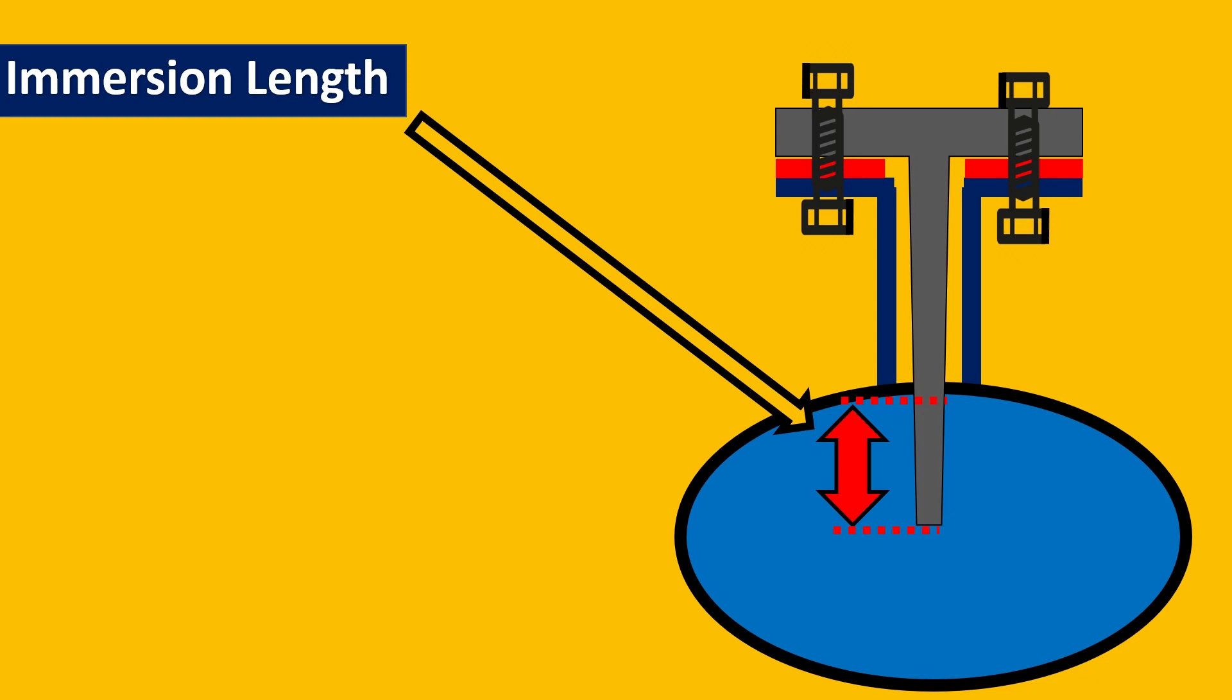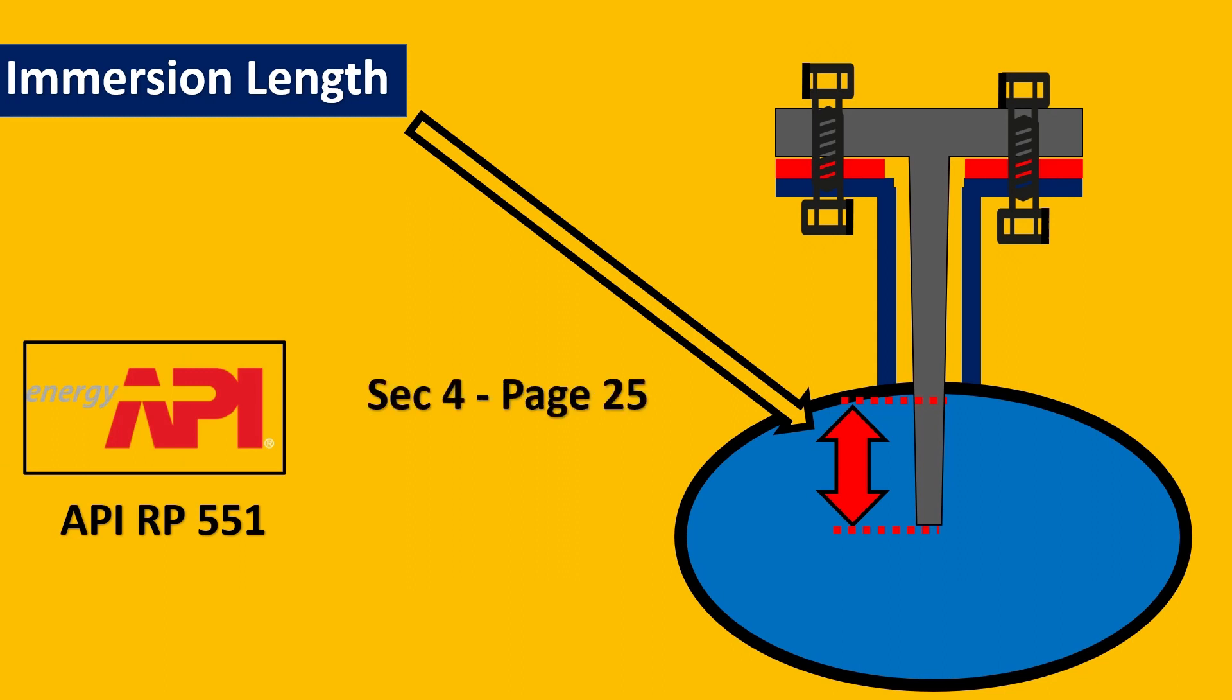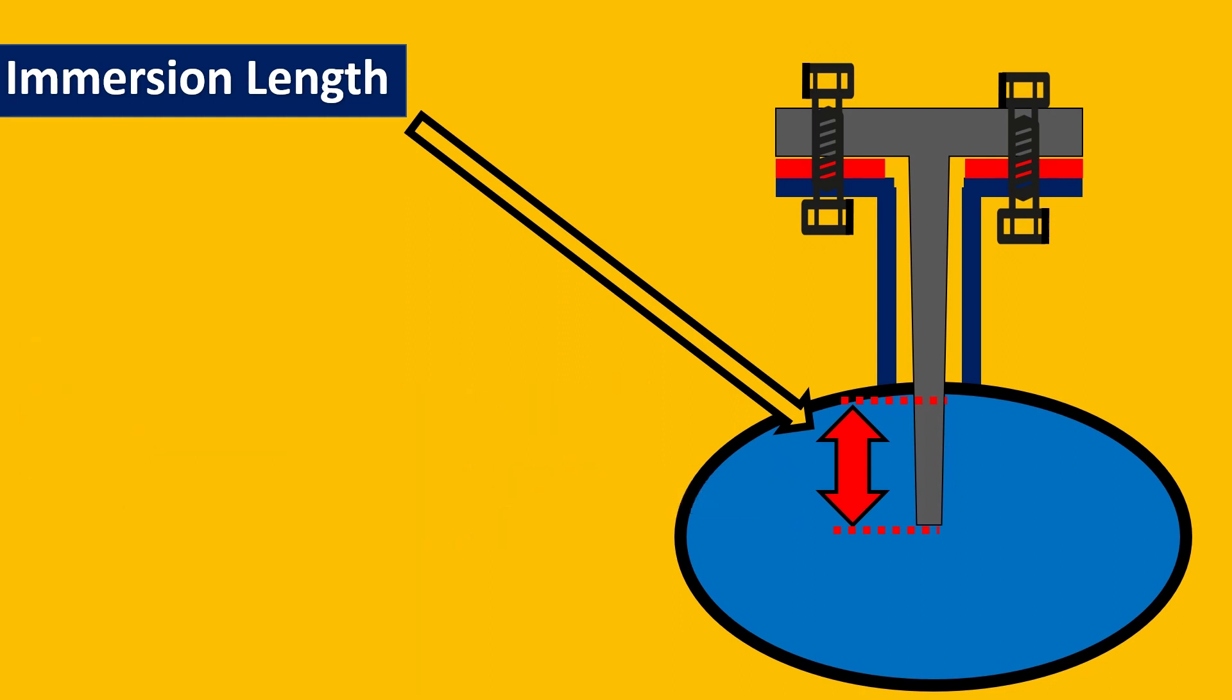This immersion length now has a lot of criteria depending on the standards that you are using, client preferences, etc. We look at some very common or well-known standards and recommendations. So let us go for API RP 551. Here in section 4 and page number 25, it says that the minimum immersion length should be 2 inches, which is around 50 mm. So at least it should be 50 mm within the process if the line is completely filled. Now this is very important criteria. But is it the only criteria? The answer is no.